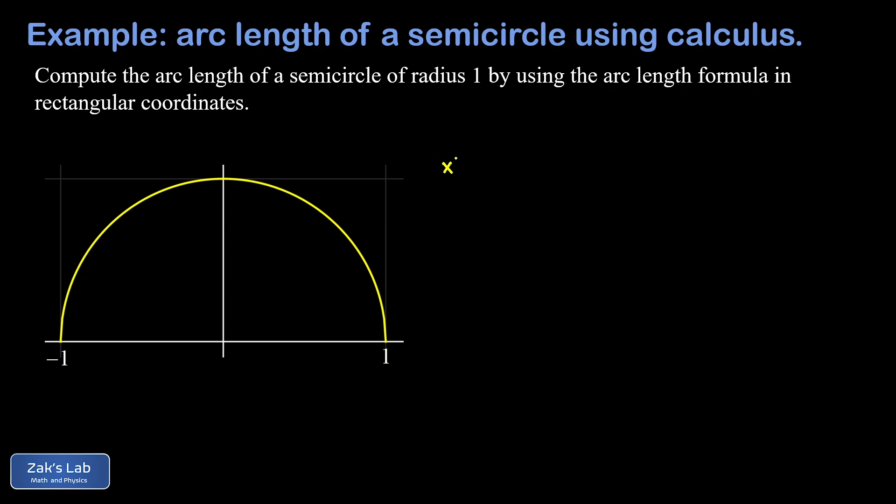Recall that the equation of a circle of radius 1 centered at the origin is x squared plus y squared equals 1. Well, if we solve that for y, we get equations for the upper and lower half of the circle. So I just subtract x squared from both sides and take the square root of the result. The upper half will correspond to the positive y values there. That means the equation of our curve is y equals square root 1 minus x squared.